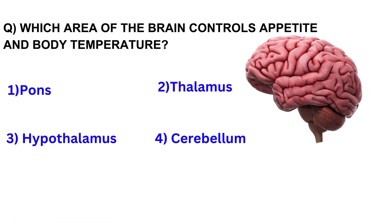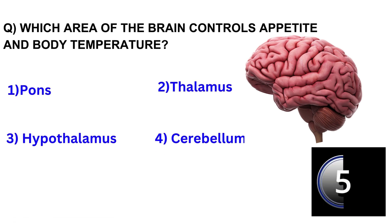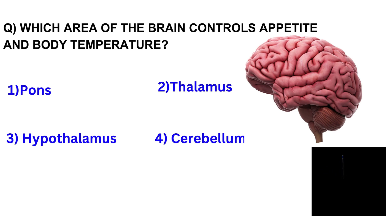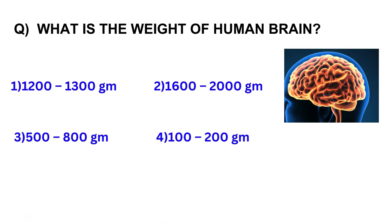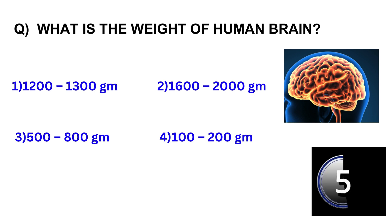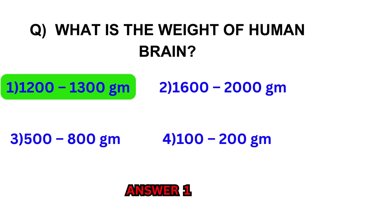Which area of the brain controls appetite and body temperature? Hypothalamus. What is the weight of the human brain? 1200-1300 gm.